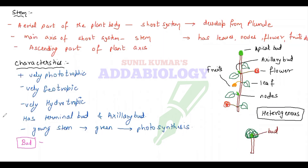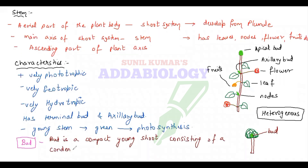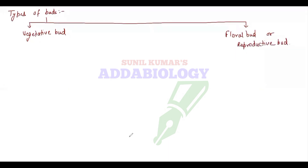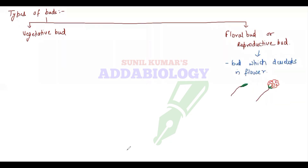A bud is nothing but a condensed compact young shoot consisting of overlapping leaves. The largest bud is the cabbage. There are different types of bud — vegetative bud and floral bud. Floral bud is a reproductive bud because it develops into a flower and will help in sexual reproduction.